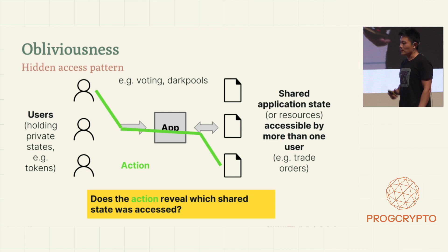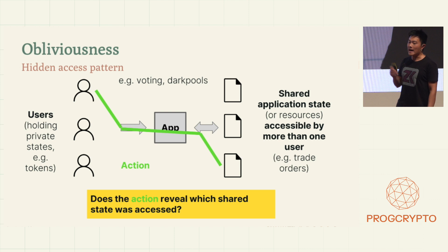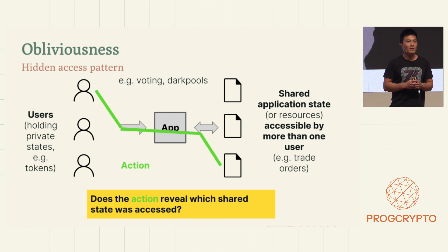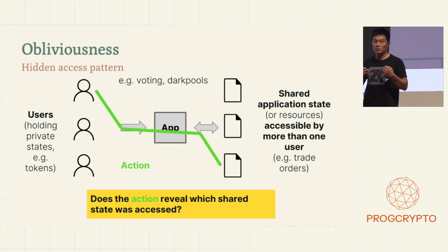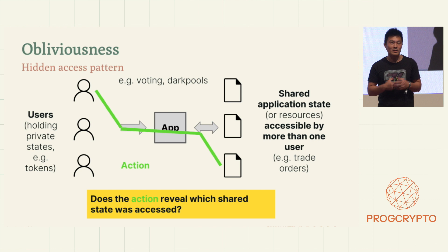As applications get more complicated, there might be more resources with shared owners. If an action reveals which resource users are getting access to, it's not terribly private. For example, if there are multiple NFT auctions running in parallel and you're submitting a bid for a particular NFT, if the system reveals exactly which NFT you're interested in, that's not very private. So for applications with a lot of shared resources, we'd also like to have obliviousness — meaning we'd like to hide the access pattern that users are incurring.